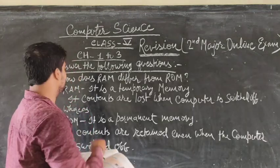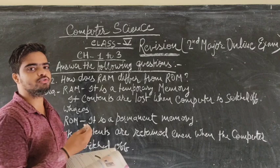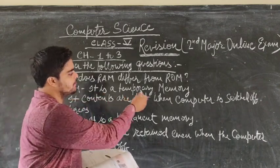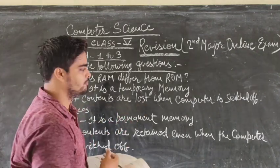Question 2: How does RAM differ from ROM? Answer: RAM is a temporary memory and its contents are lost when computer is switched off. ROM is a permanent memory and its contents are retained even when the computer is switched off.